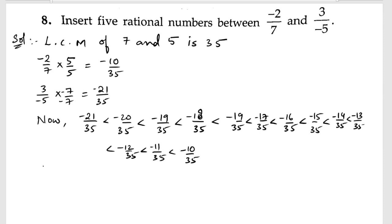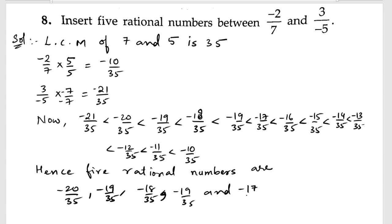Among these numbers we can take any 5 rational numbers. I am going to take, hence, 5 rational numbers are: minus 20 by 35, minus 19 by 35, minus 18 by 35, minus 17 by 35, and minus 16 by 35. These are 5 rational numbers.